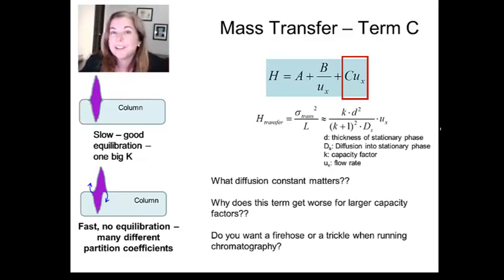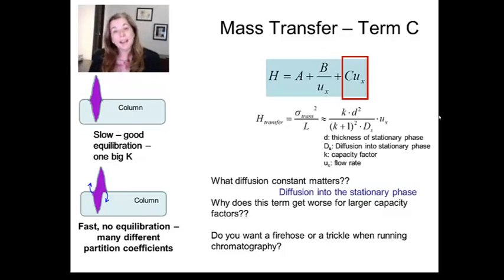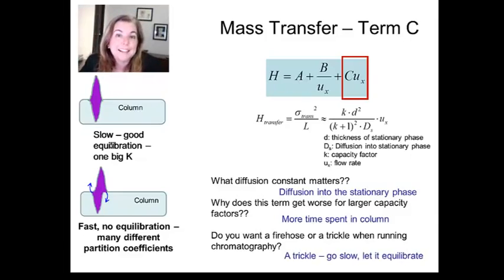Let's practice with some conceptual questions. What diffusion constant matters to term C in the Van Deemter equation? It's going to be mass transfer, and it's going to be the diffusion of the analyte into the stationary phase. Why does this term get worse for larger capacity factors? That has to do with how much time it spends in the column. More time spent in the column is going to aggravate this problem. Do you want a fire hose, or do you want to trickle when you're running this? Well, you want to move really slowly, because you want to have that analyte have plenty of time to equilibrate. So you want to trickle.